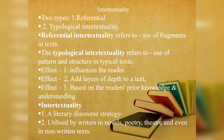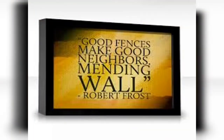Intertextuality has three effects. One is it influences the reader. Second is it adds layers of depth to a text. And the third is that the meanings of the particular text depend upon the reader's prior knowledge and understanding. Intertextuality is a literary discourse strategy utilized by writers in novels, poetry, theatre, and even in non-written texts. We can take the example of Robert Frost's poetry Mending Wall, where he uses the line 'Good fences make good neighbors' — this line is an example of intertextuality as it is a proverb taken and incorporated into the poem.